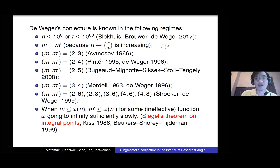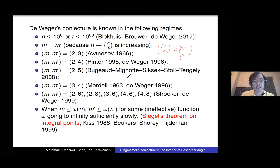For example, n choose 2 equals n' choose 3 is actually the equation of some elliptic curve, and we can count how many solutions there are. For various small values of m and m', you have some low-degree curve, and there are techniques to find integer points on these curves. So we know this conjecture is true for small values of m and m'. For any fixed m and m' that are not equal, there are only finitely many solutions, thanks to a famous theorem of Siegel on integral points.